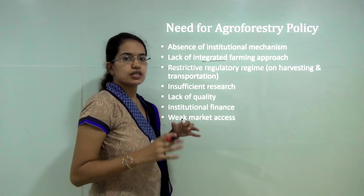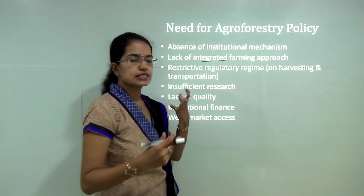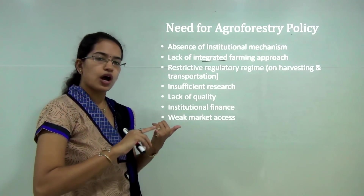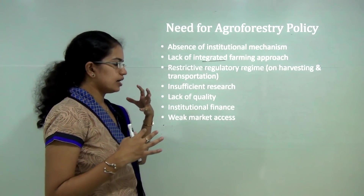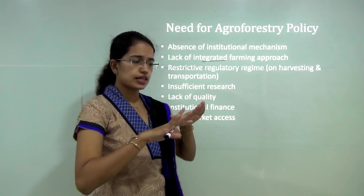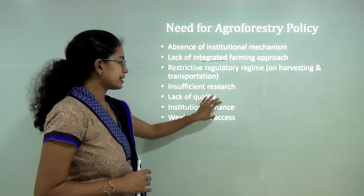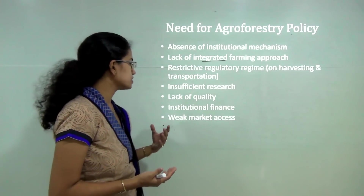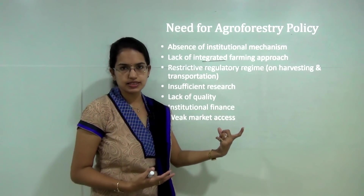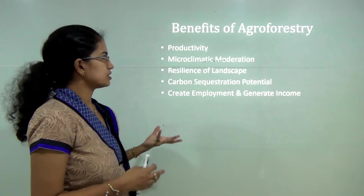There is no integrated farming approach adopted across the country. Certain regulatory regimes are very restrictive, specifically regarding harvesting and transportation, and these stringent regulations need to be addressed. There is also a huge gap in research in northeast and northern India, a lack of institutional financing, and even where farmers are planting crops, they do not have proper market access. These are the key reasons why an agroforestry policy needed to be established.